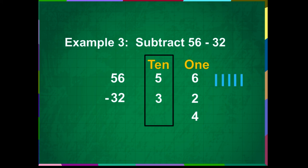So, the difference of 56 minus 32 is 24.